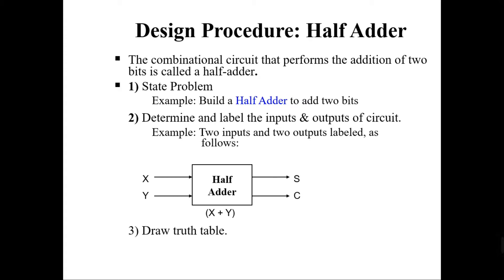So first, you can see there is a simple block diagram for a half adder circuit. The half adder circuit is a circuit which can actually add only two bits of numbers. This is the block diagram for a half adder circuit, so there are two inputs, X and Y, and these two inputs will be added together.